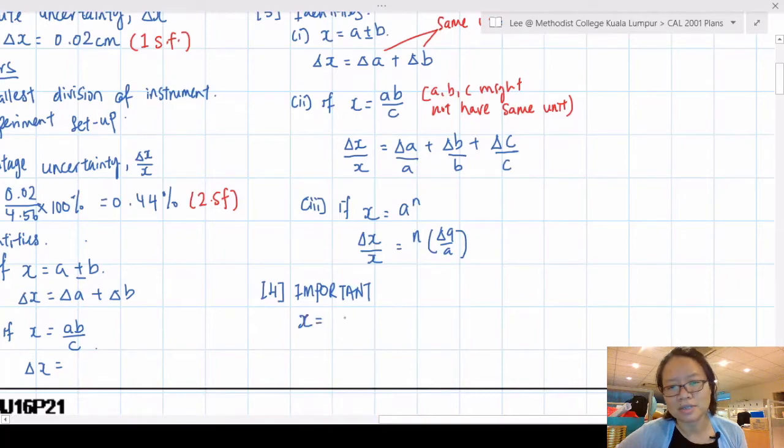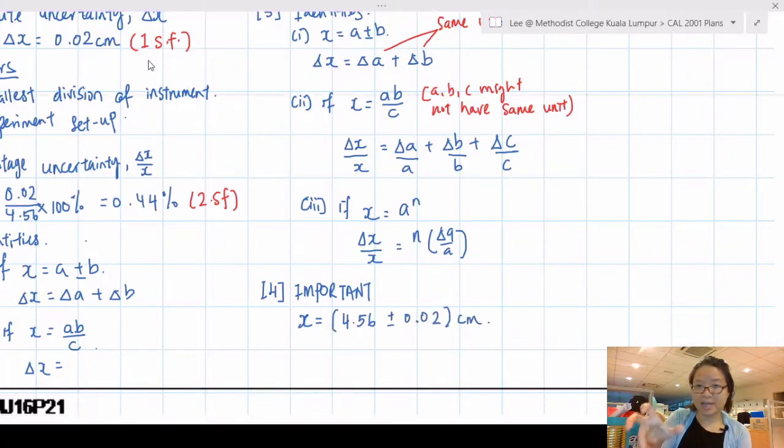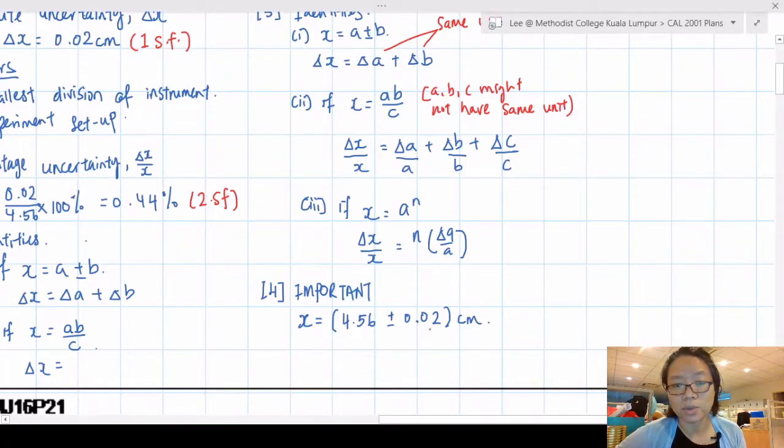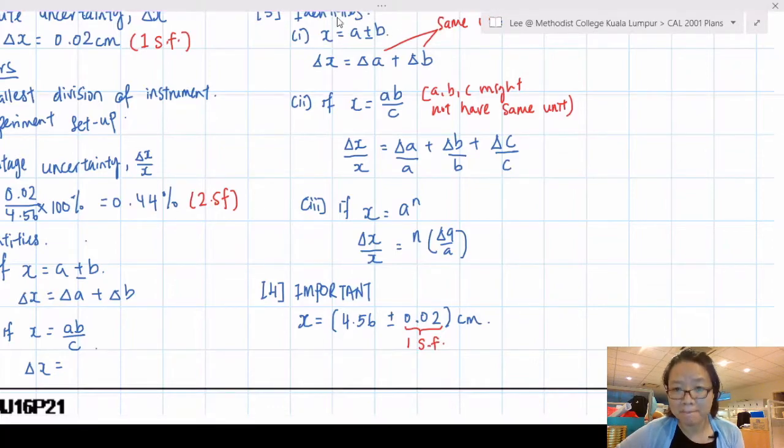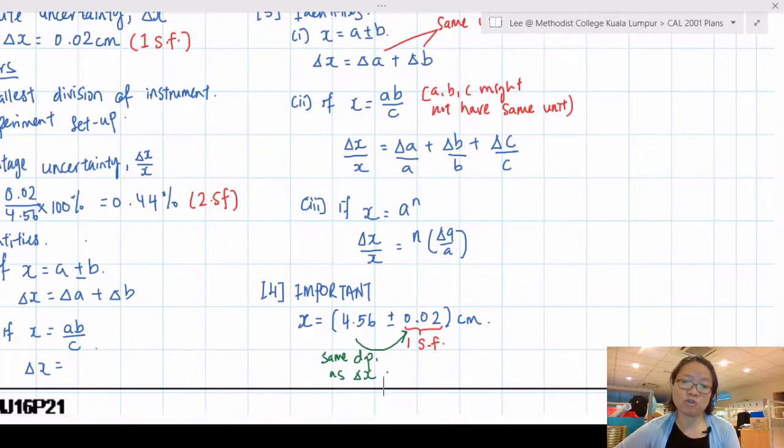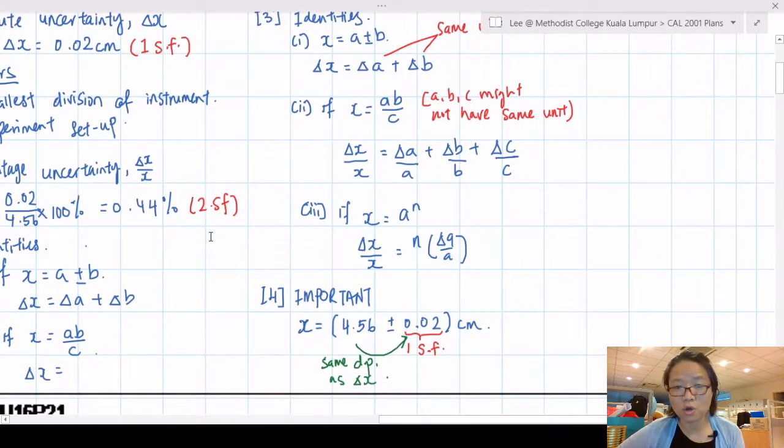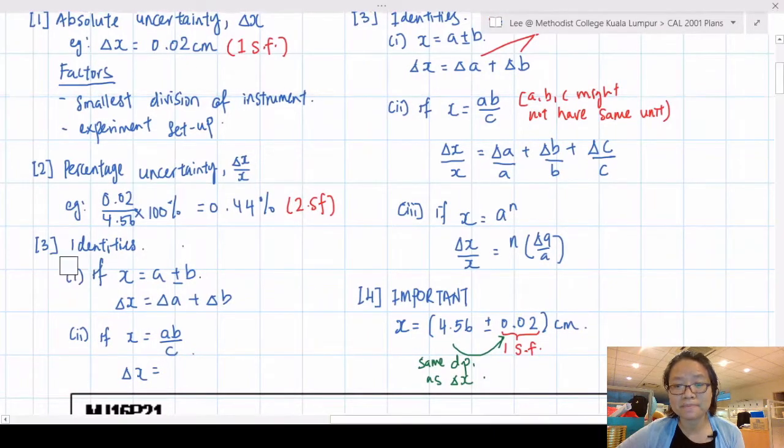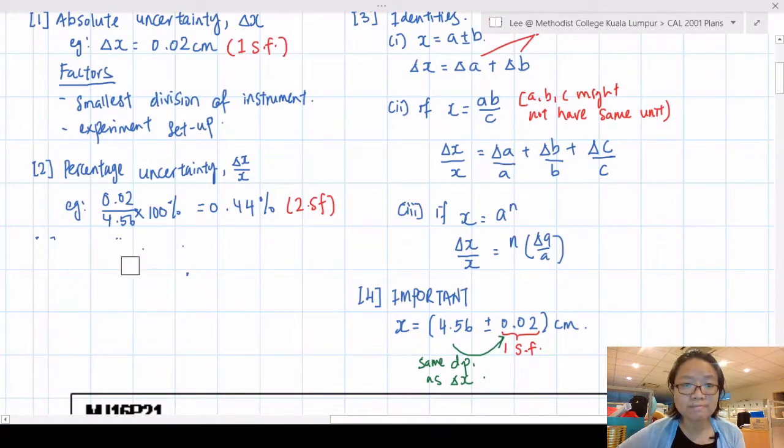Back to the example: 4.56 ± 0.02 cm. This absolute uncertainty must be 1 SF, the number at the back has to be 1 SF, and the number in front must have the same decimal point as the number at the back. Your actual reading has the same decimal point as your Δx or absolute uncertainty. Failure to follow will lose one mark.